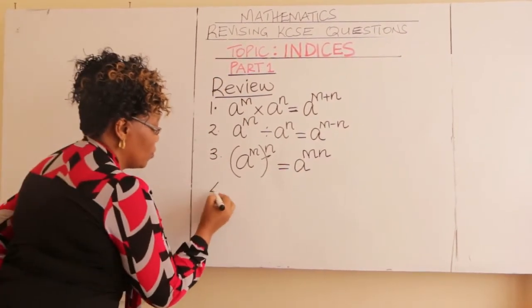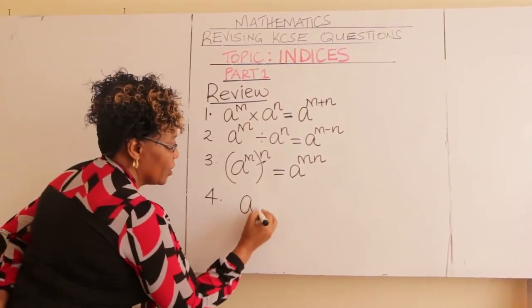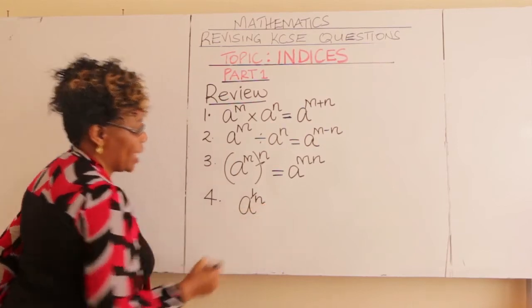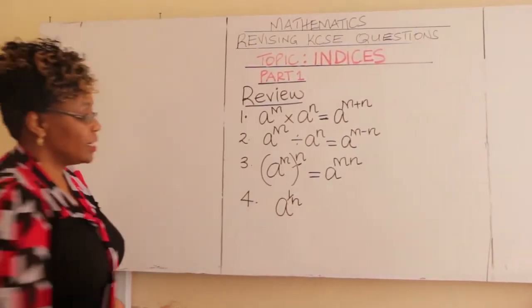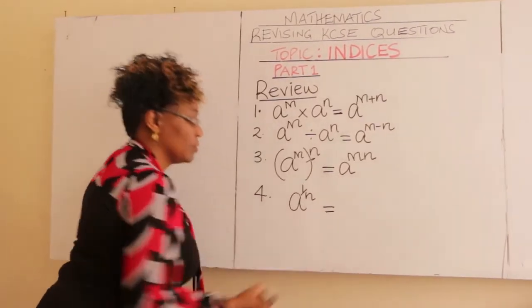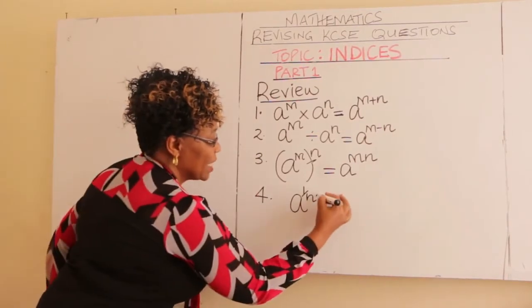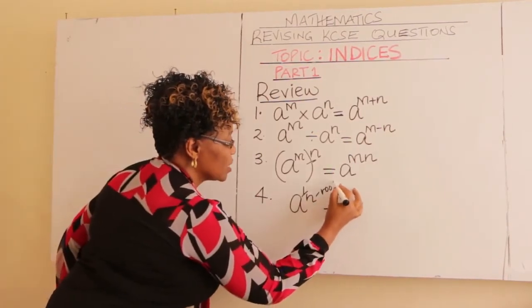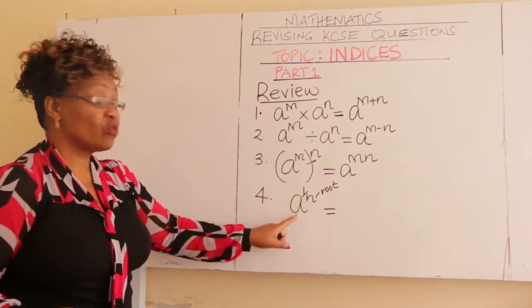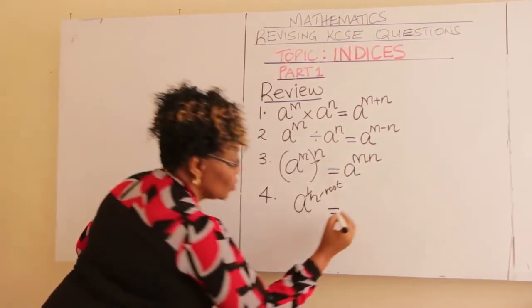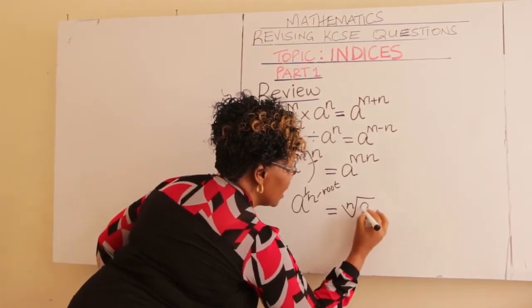Number four: if you have A raised to 1 over N, this is the same as N root of A. This denominator here, take it as a root. So it is the same as N root of A.